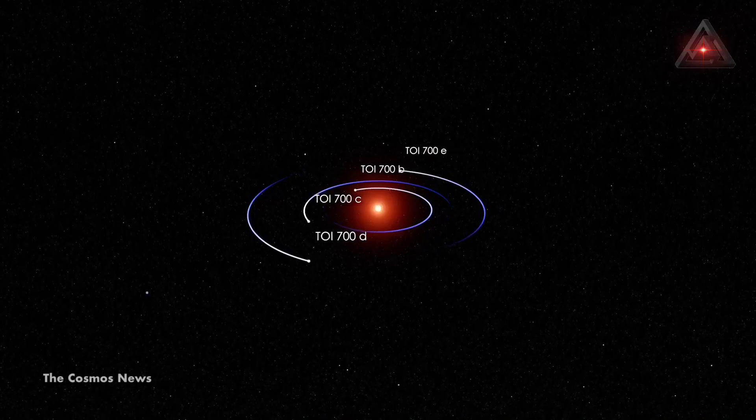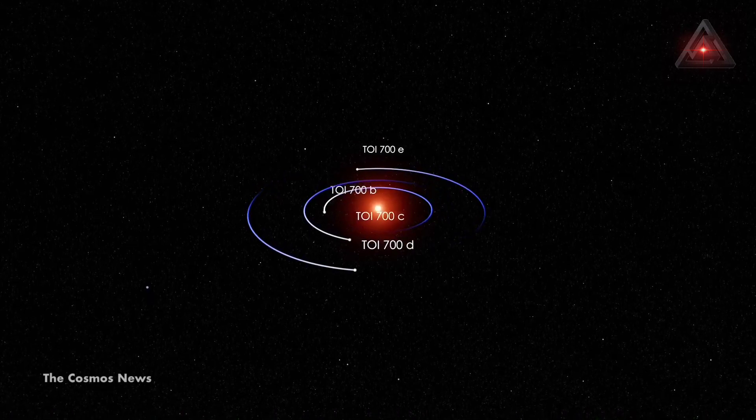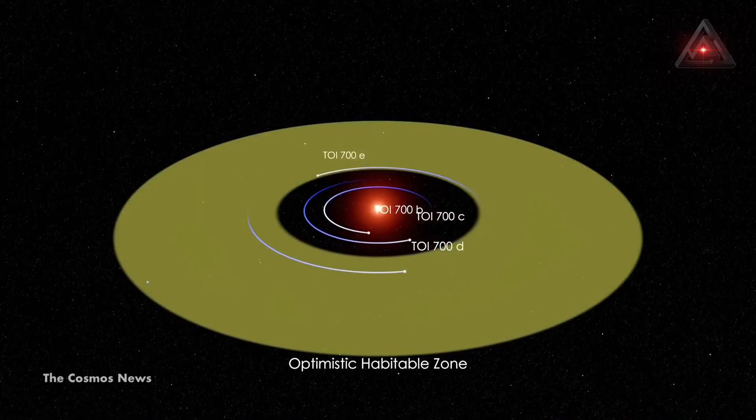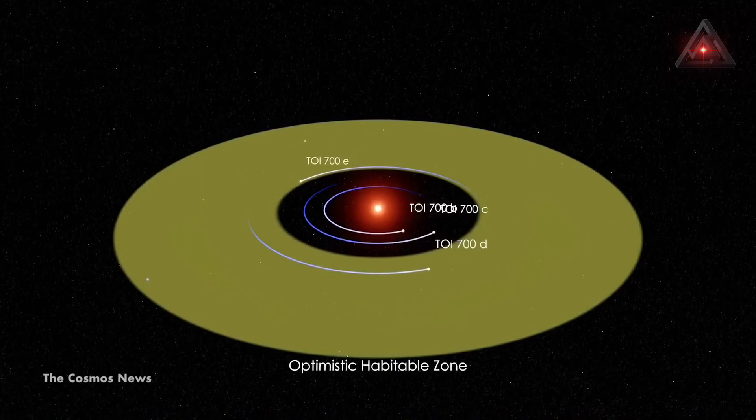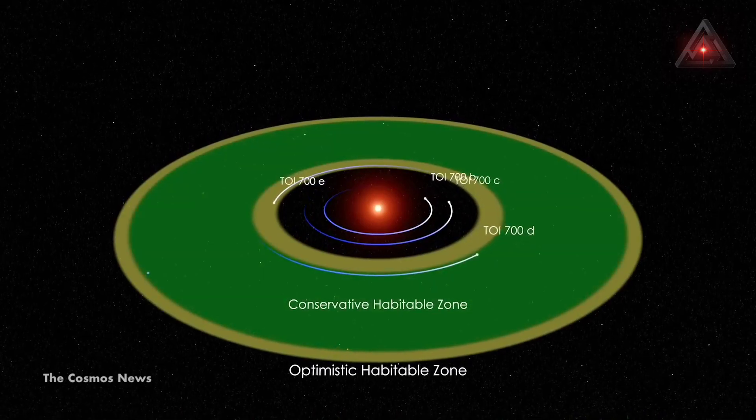The two exoplanets in the habitable zone of the star, planets D and E, have longer orbits of 37 days and 28 days, respectively, because they're a little more distant from the star. The newly announced Planet E is actually located between planets C and D.